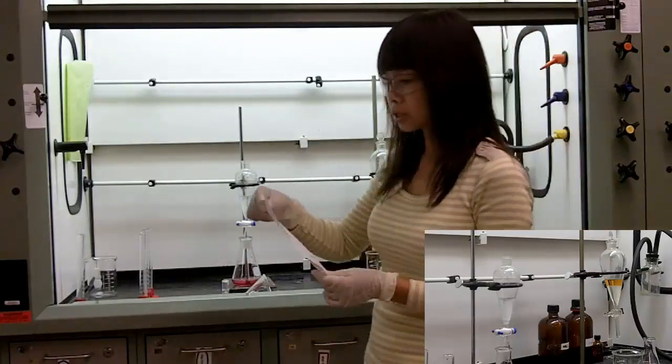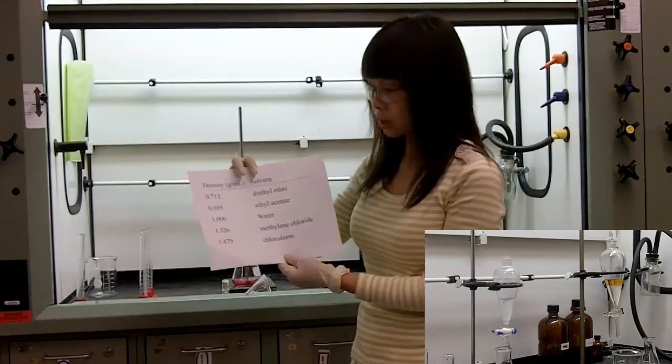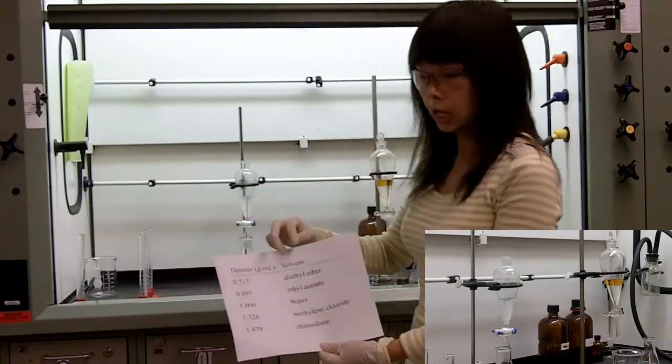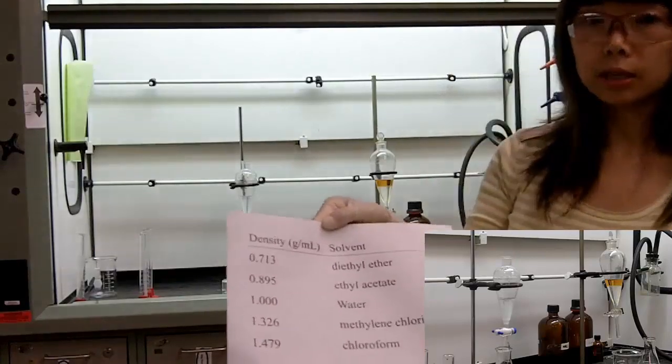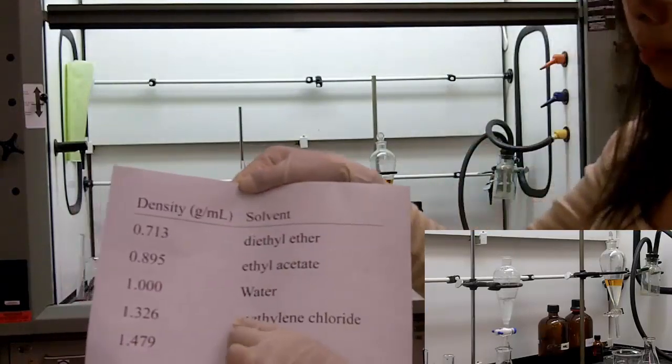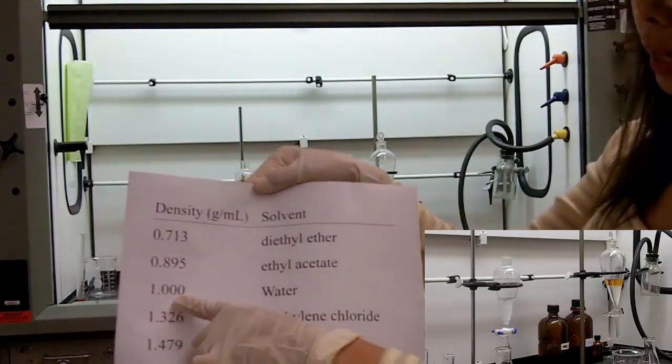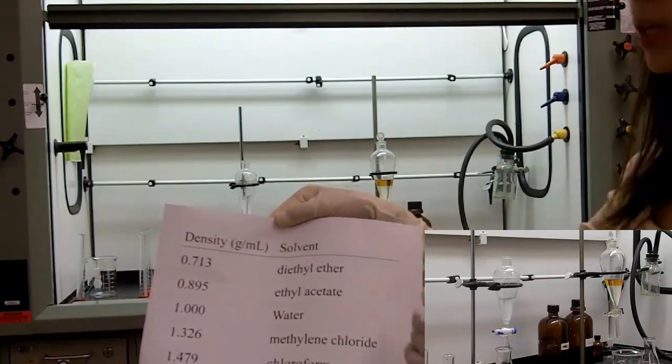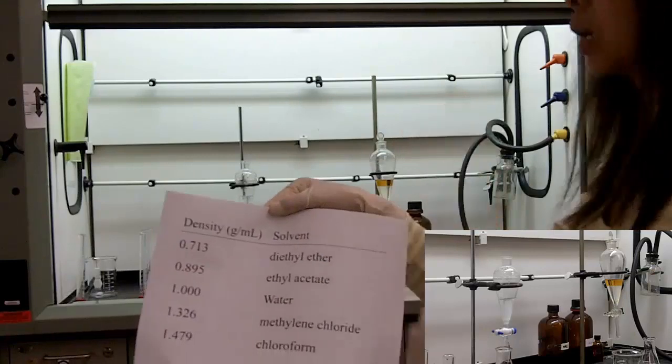There is one thing about extraction we need to point out. The methylene chloride we are using here has a heavier density than water, so it is the bottom layer when we do the extraction, and we just need to drain the bottom layer straight into the Erlenmeyer flask.